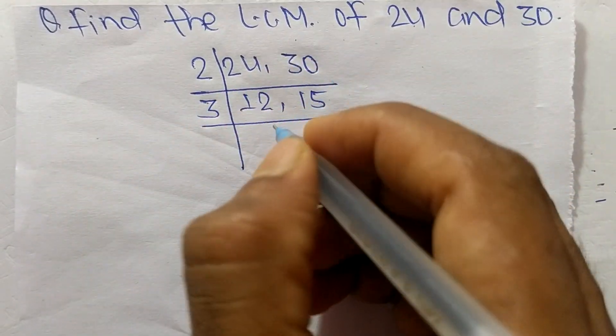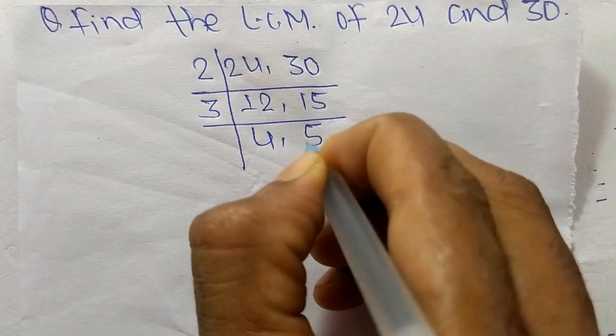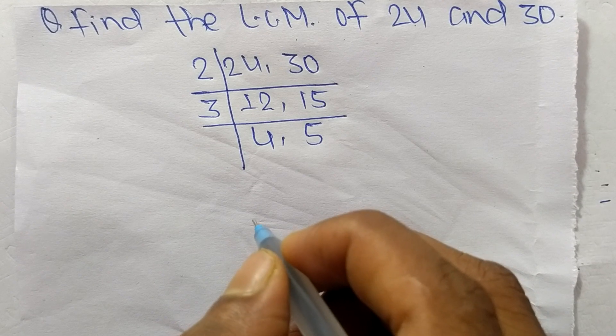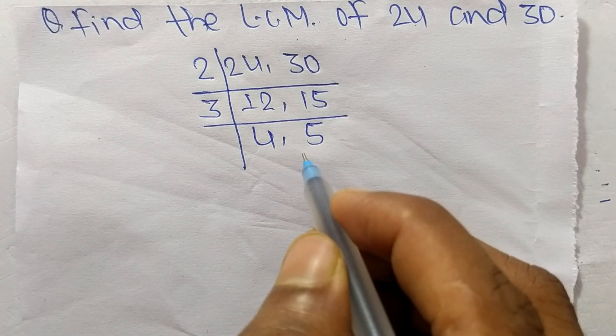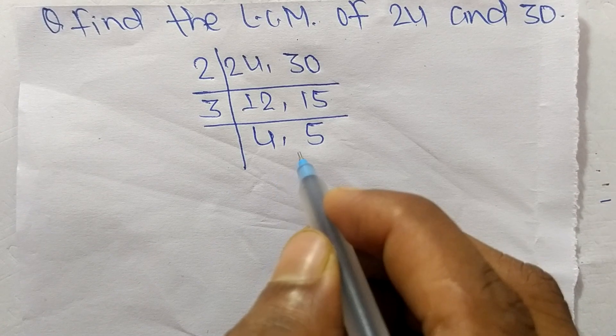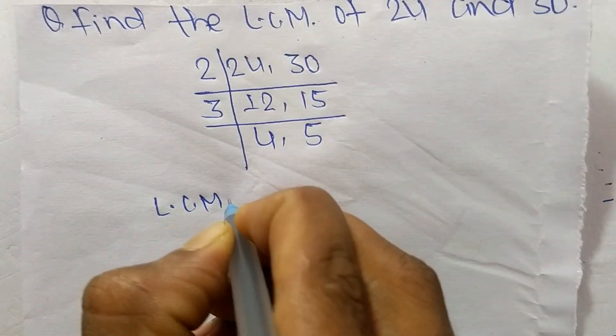So 3 times 4 means 12, and 3 times 5 means it is 15. At last we have here 4 and 5 which are not exactly divisible by the same number, so its LCM is equal to...